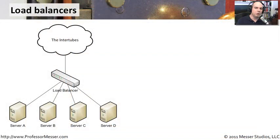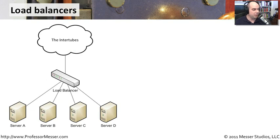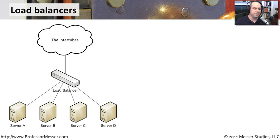As web technologies became more and more popular, we found that we needed some way to scale these web servers. When you go to google.com, you don't go to a single server. Google obviously has hundreds and hundreds, and perhaps even thousands of Google servers out there that we are connecting to at any particular time. Out there on the network, you're usually hitting something like a load balancer. There are many ways to distribute load across different servers, and a load balancer is a very common way to do that when you're in a data center.